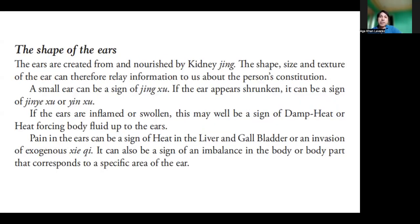The shape of the ears. The ears are created and nourished by kidney Jing. The shape, size, and texture of the ear can therefore relay information to us about a person's constitution. A small ear can be a sign of a Jing deficiency. If the ear appears shrunken, it can be a sign of Jing deficiency or Yin deficiency. If the ears are inflamed or swollen, this may well be a sign of damp heat or heat forcing body fluid up to the ear. Pain in the ears can be a sign of heat in the liver and gallbladder or an invasion of exogenous Qi. It can also be a sign of an imbalance in the body or body part that corresponds to a specific area of the ear.